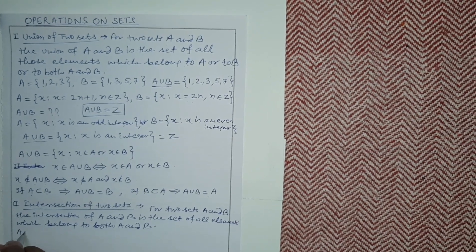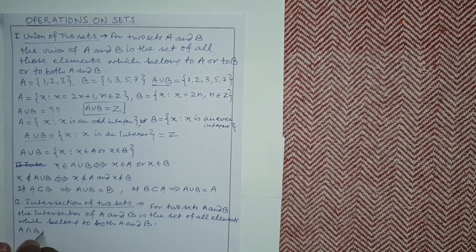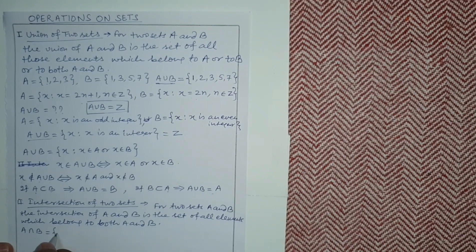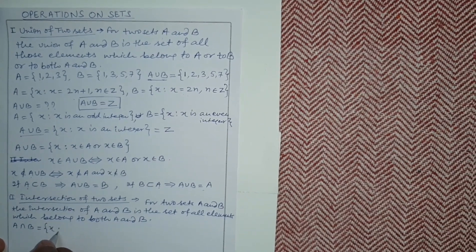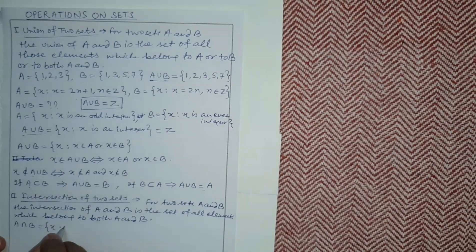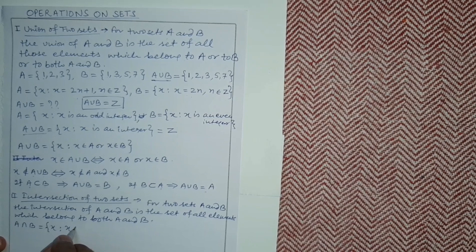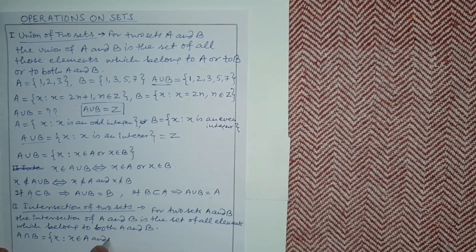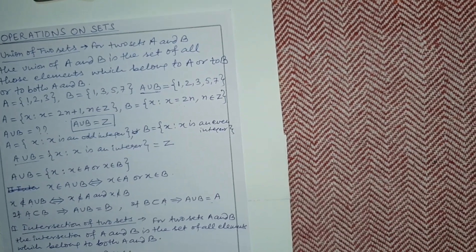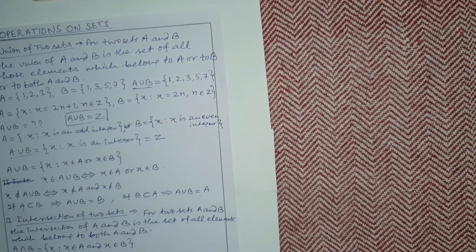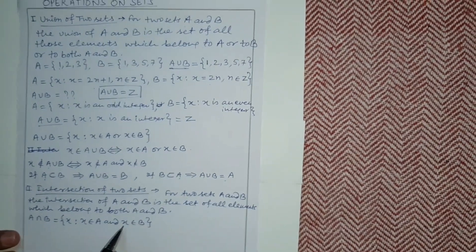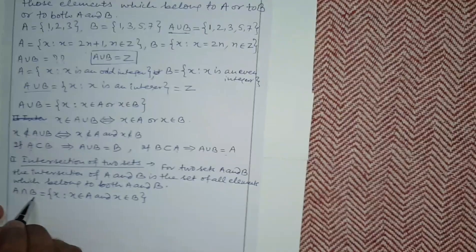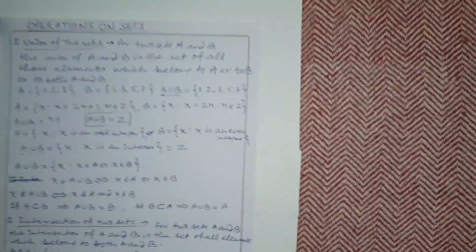So A intersection B is the set of all x such that x belongs to A and x belongs to B. Here x belongs to both A and B simultaneously. This is written as A ∩ B.